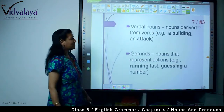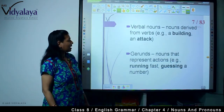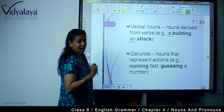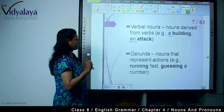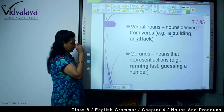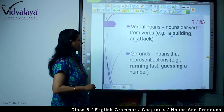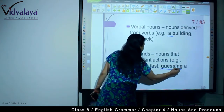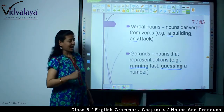Then verbal nouns — nouns derived from verbs. For example, a building, an attack. Notice that when there is an article, the article always comes before the noun. Whenever you see an article, that means the word after it is a noun. Then gerunds — nouns that represent actions. For example, running fast, guessing a number. These are all gerunds.